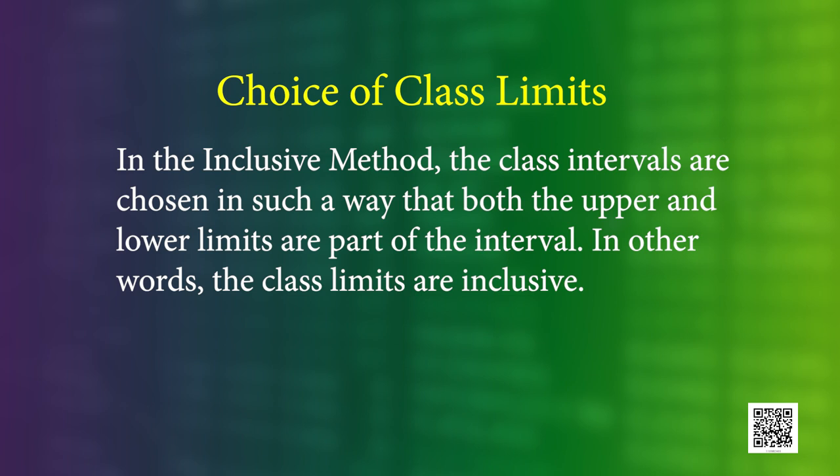In the inclusive method, we choose class intervals such that both the upper and lower limits are part of the interval, i.e., the class limits are inclusive. For example, suppose we choose the class intervals as 1 to 5, 6 to 10, 11 to 15, 16 to 20, etc. A household whose size is 5 will be included in the first class 1 to 5 as both limits are inclusive. Similarly, a household with size 6 will be included in the second class 6 to 10 and so on.